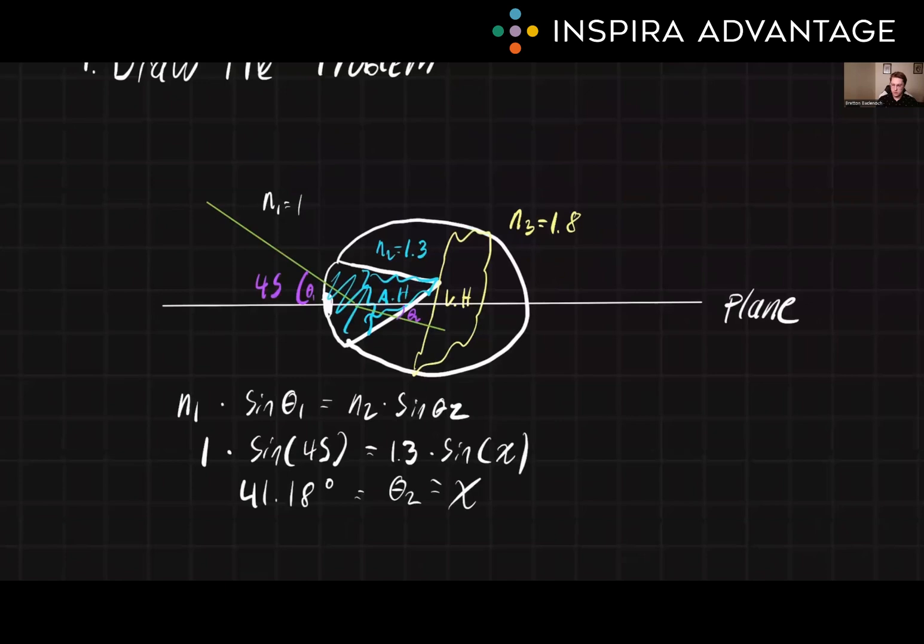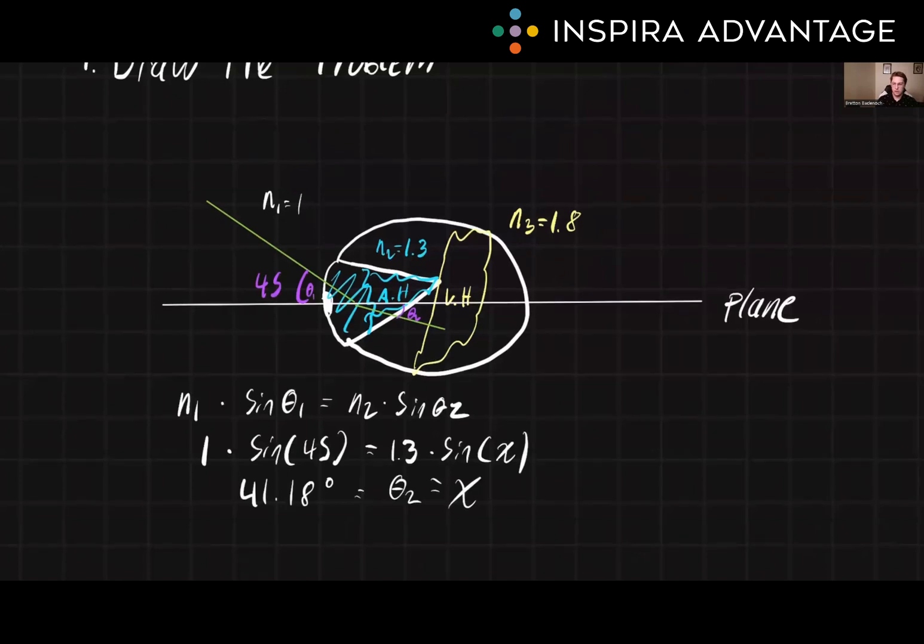This problem illustrates how Snell's law can be used to understand the refraction of light as it passes through the different media of the human eye, such as the aqueous humor. It also shows how the indices of refraction and the angles of incidence and refraction can affect the behavior of light in the eye and how this can impact vision.